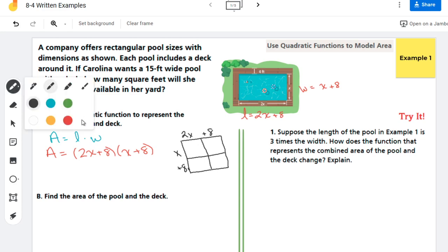So remember, for this, I just go and find the area of my box. 2x times x is 2x squared. X times 8 is 8x. 8 times 2x is 16x. And 8 times 8 is 64.